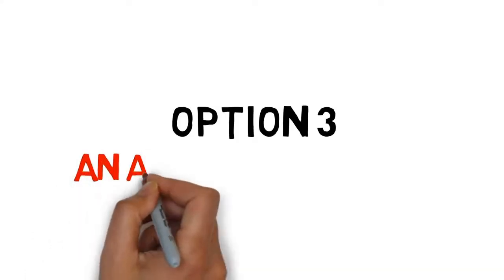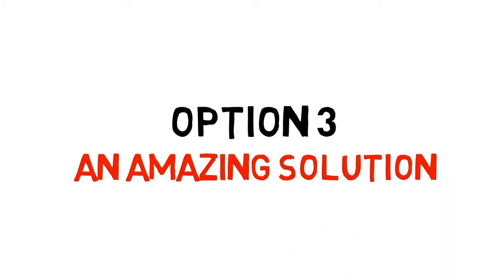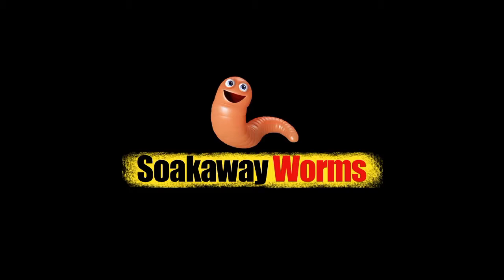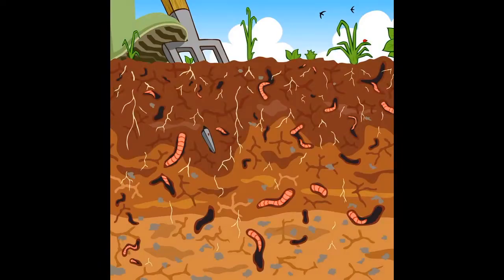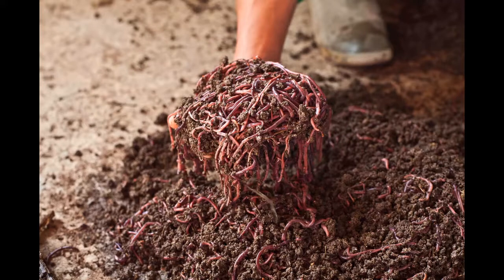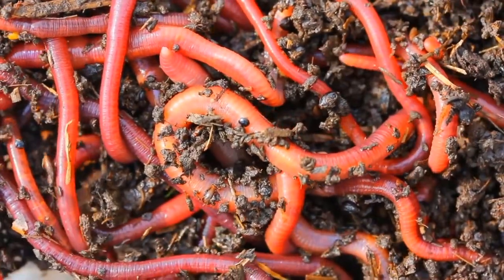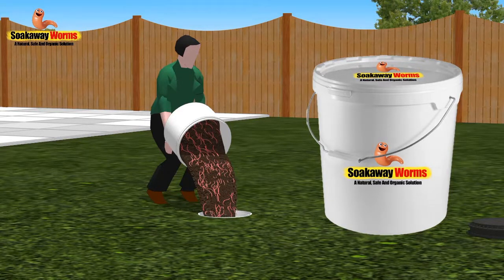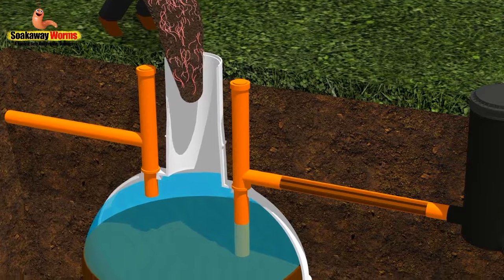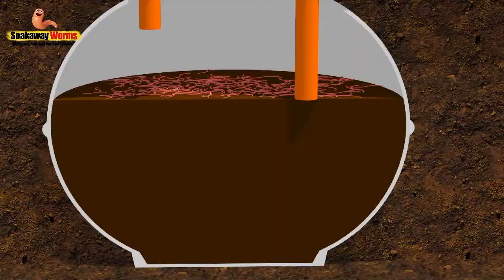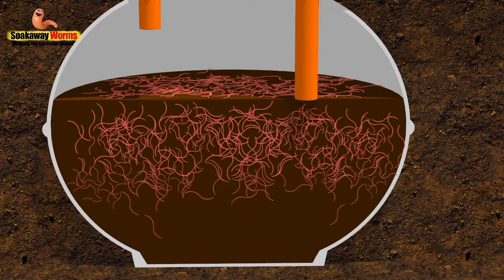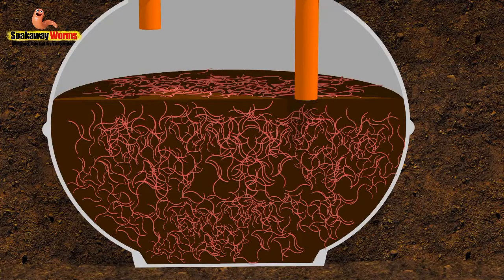Option three is an amazing solution that will fix all your septic tank and soak away problems. Soak away worms are an incredible, safe, clean, natural, and organic solution. Worms have been around for thousands of years breaking down and converting waste into safe, clean organic matter. Soak away worms will not only unblock your soak away from all the fat, grease, and sludge, but will also keep it clean, preventing your septic tank and soak away from ever developing problems again. Soak away worms come in a large bucket — simply take the lid off and tip the entire contents into the septic tank. The worms will sink to the bottom, landing on top of the sludge, and very quickly adjust to their new surroundings, starting to burrow into the fat, grease, and sludge while breeding and multiplying.